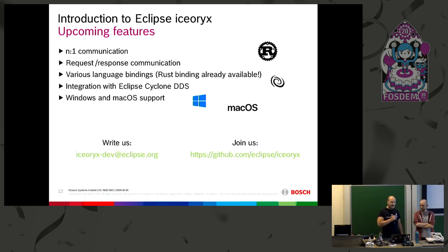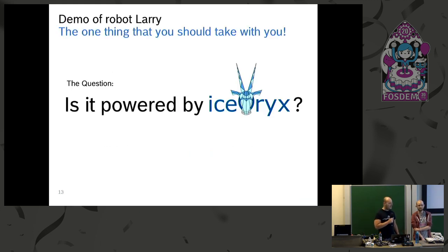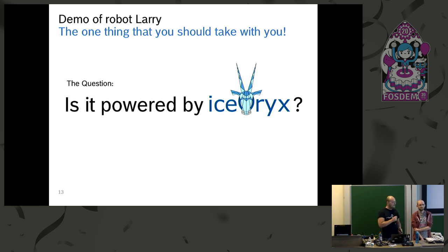Thank you Simon. When I start a presentation like this, I try to figure out my main goal. Here it is: is it powered by Iceoryx? A typical middleware does a lot of copies — a sender produces data and wants to transmit it to multiple receivers with many copies involved. Think of a 4K camera running at 60 frames per second — performance becomes a bottleneck. In Iceoryx we do it differently: you don't send data, you just point to it and say 'there's the data, take a look.' This is much faster.